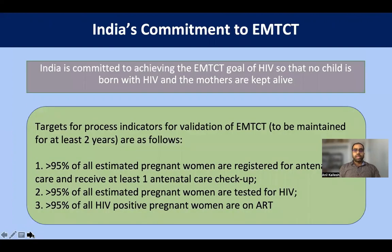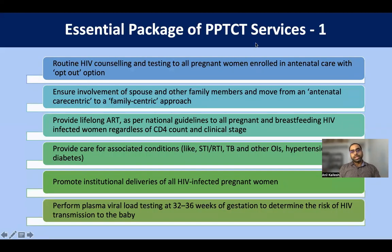India's commitment to EMTCT aims to ensure no child is born with HIV and that infected mothers are kept alive with good-quality ART. The government has set process indicators to be maintained for at least two years: more than 95% of estimated pregnant women registered in antenatal care receiving at least one check-up; more than 95% tested for HIV; and more than 95% of HIV-positive pregnant women on ART.